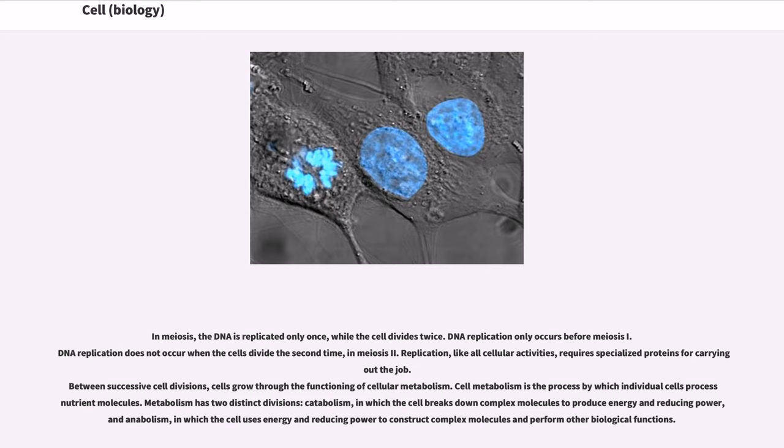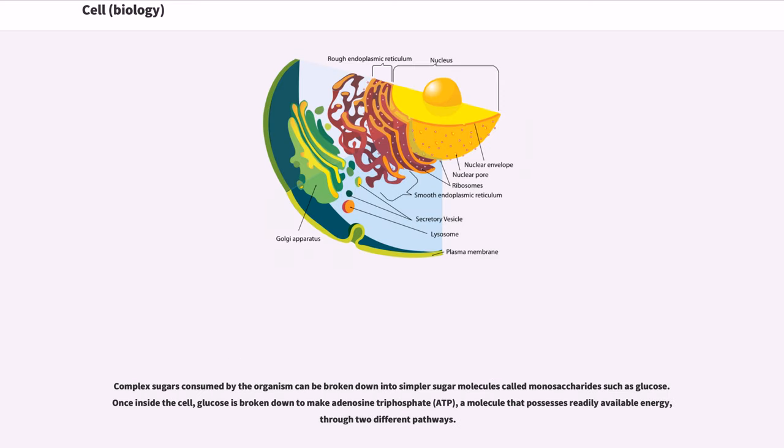Cell metabolism is the process by which individual cells process nutrient molecules. Metabolism has two distinct divisions: catabolism, in which the cell breaks down complex molecules to produce energy and reducing power, and anabolism, in which the cell uses energy and reducing power to construct complex molecules and perform other biological functions. Complex sugars consumed by the organism can be broken down into simpler sugar molecules called monosaccharides such as glucose. Once inside the cell, glucose is broken down to make adenosine triphosphate, ATP, a molecule that possesses readily available energy, through two different pathways.